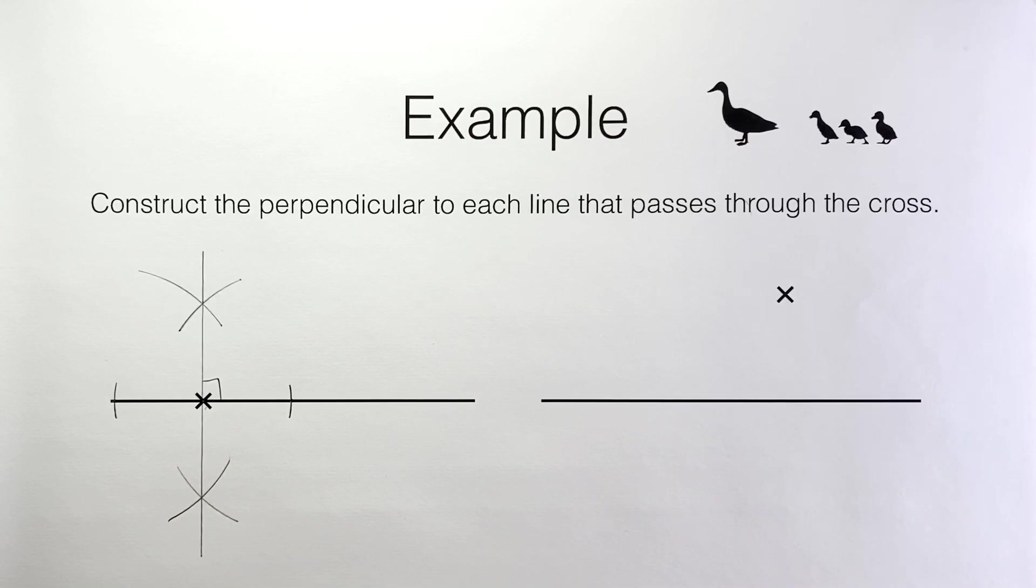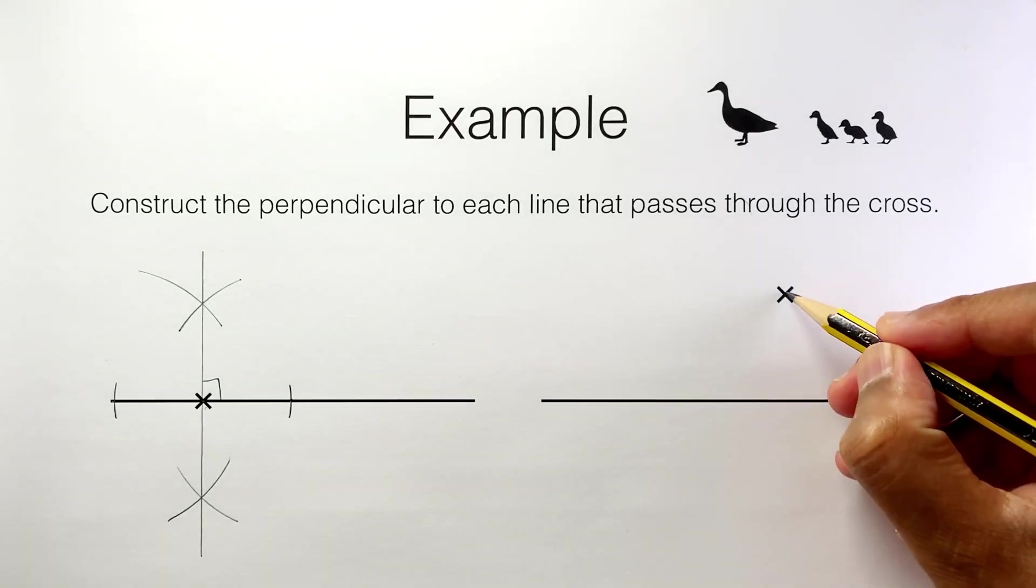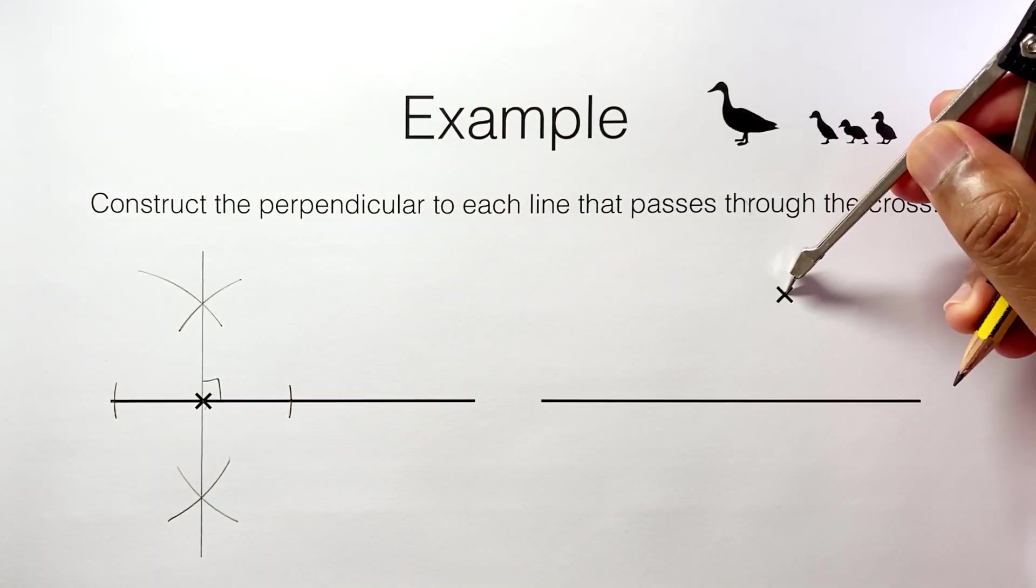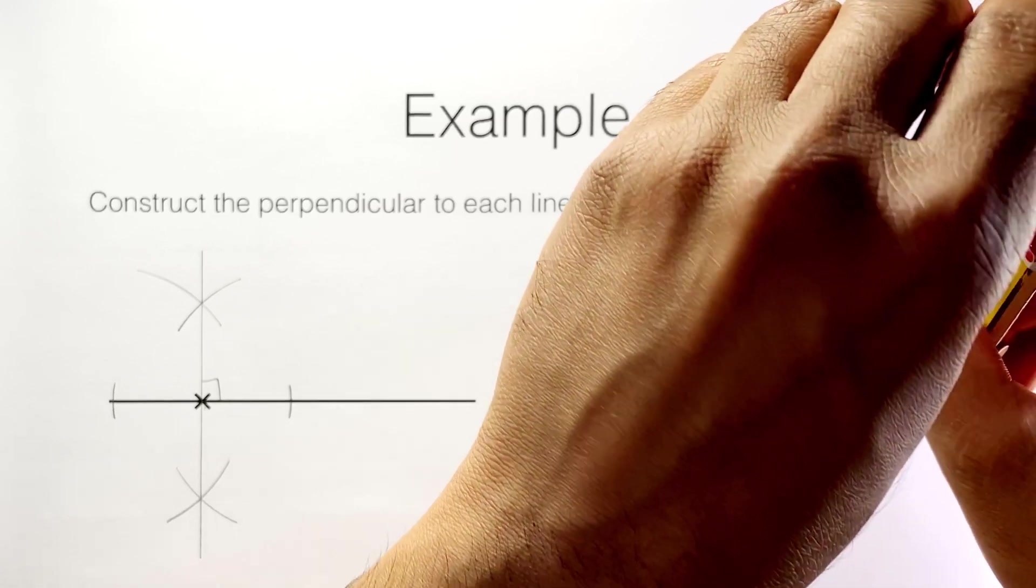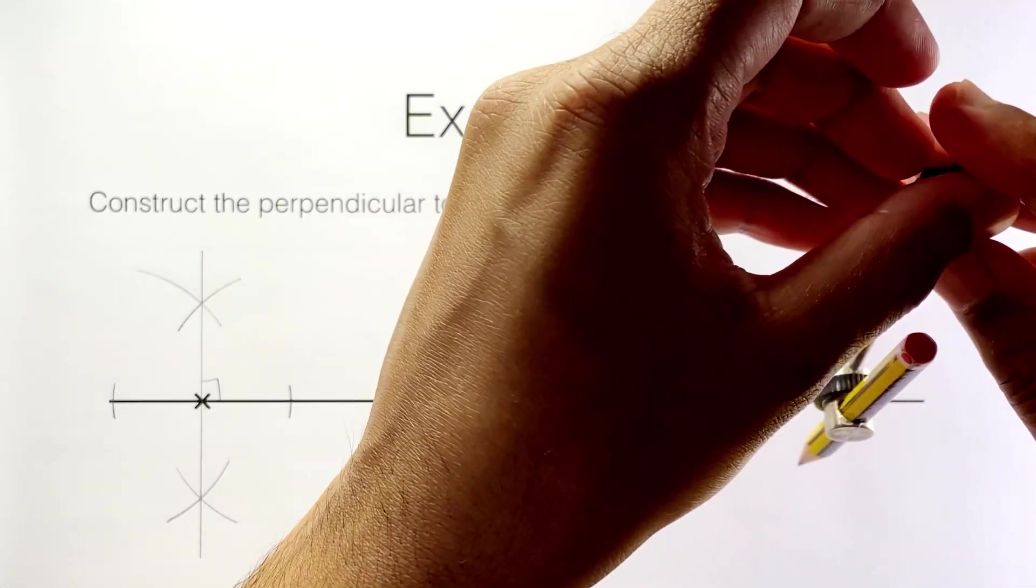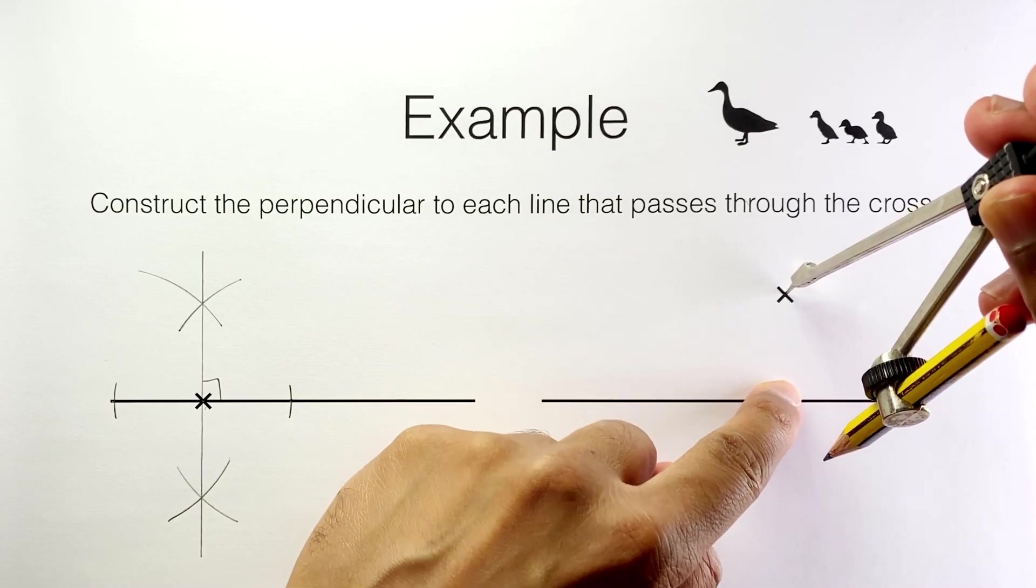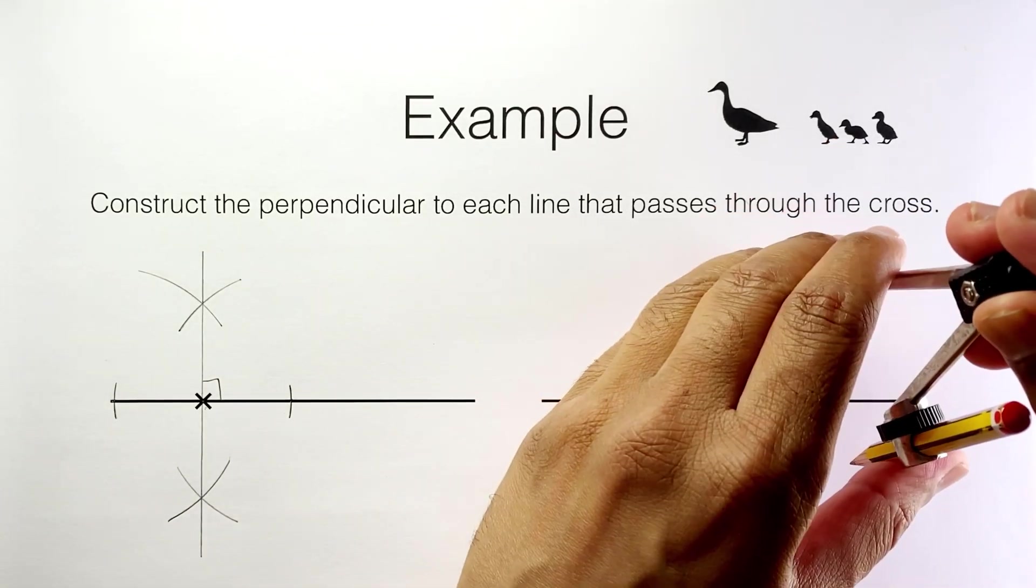Well I'll do something similar to before. I'm going to turn this problem into a problem where we just need to find a perpendicular bisector. I do that by positioning my compass needle on this point here. I'm then going to open up my compasses to a length that's a bit greater than the distance from the point to the line segment.